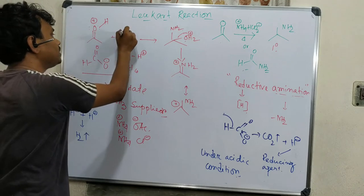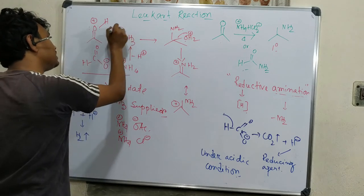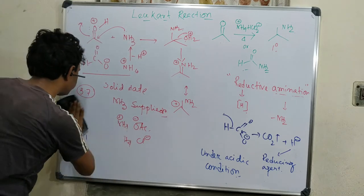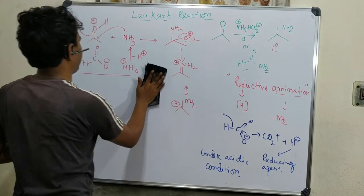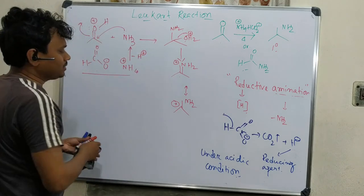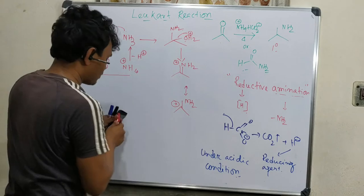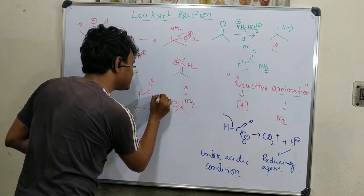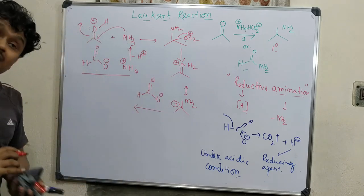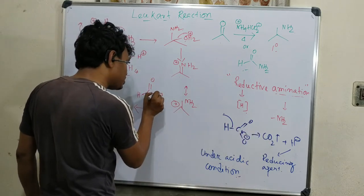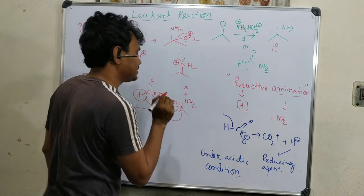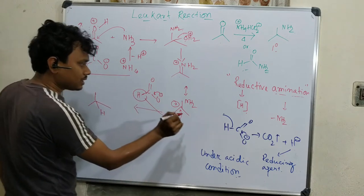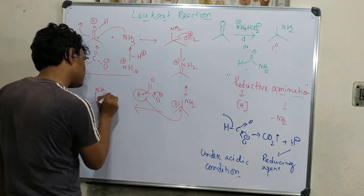This iminium cation further reacts with formic acid. This formic acid undergoes decarboxylation to produce H hydride, and this hydride acts as a nucleophile to attack here. The ultimate product is the amine. Always keep in mind the hydride here is coming from this formate.